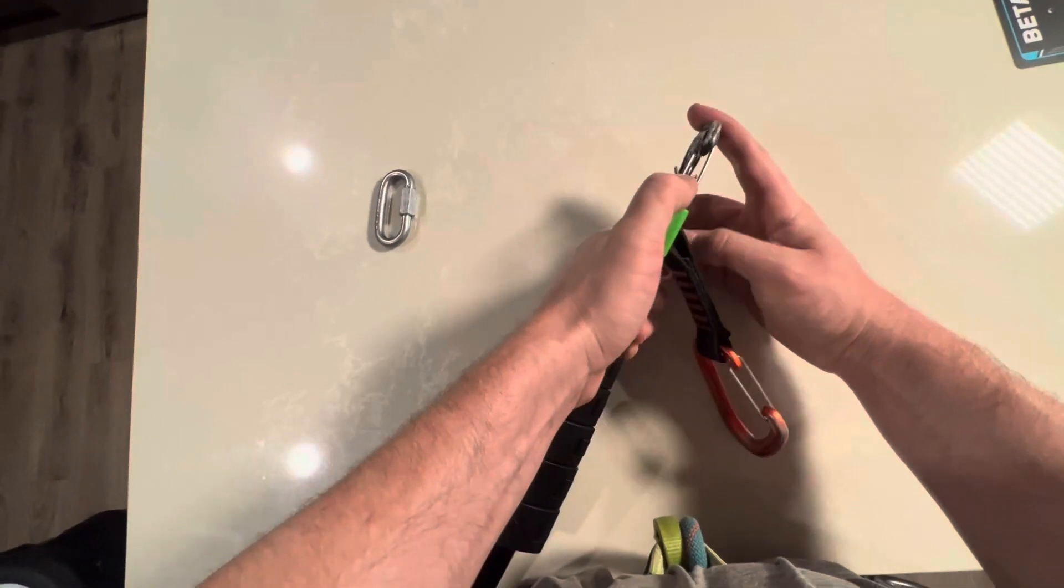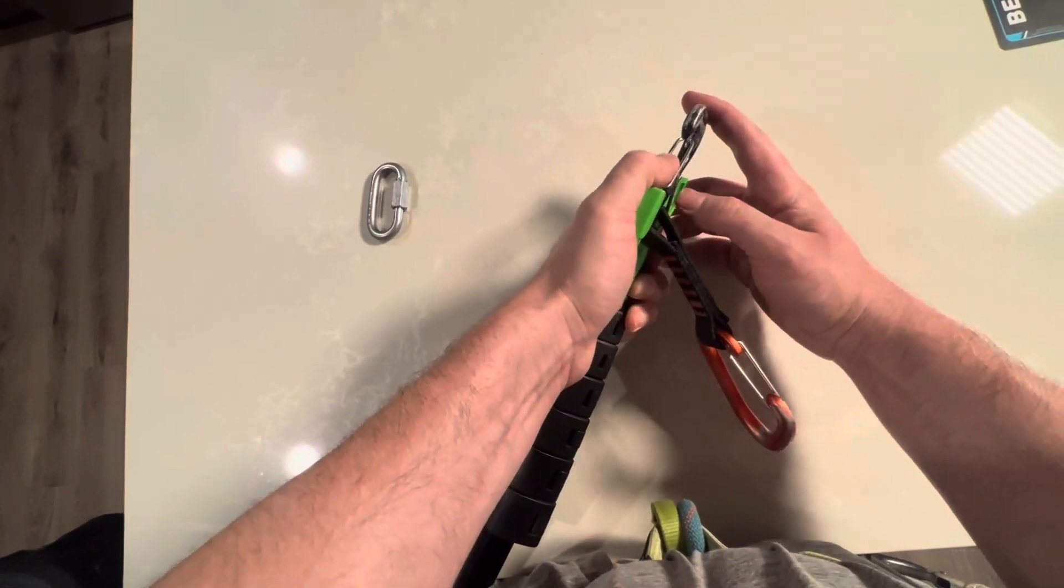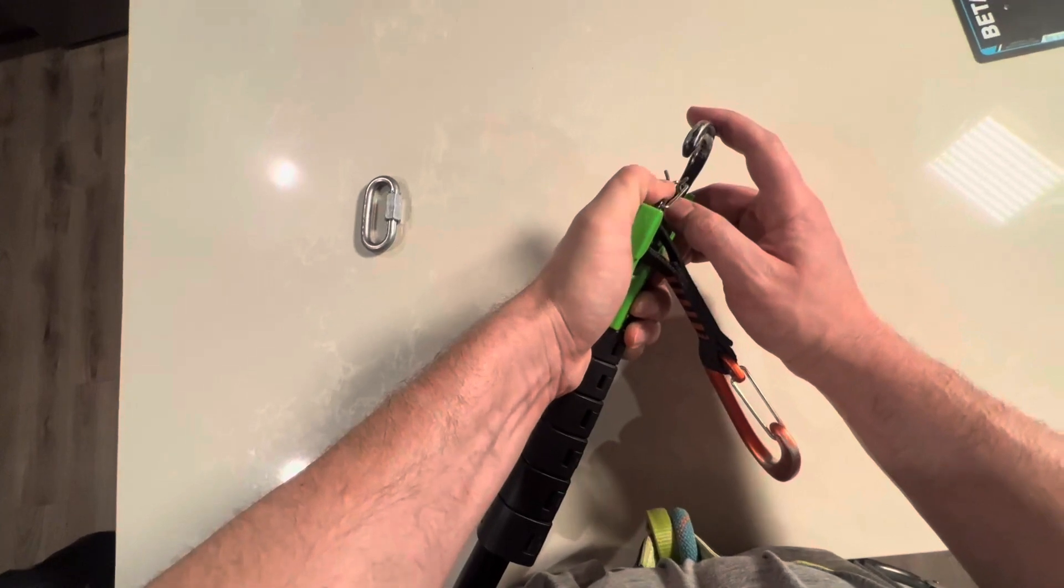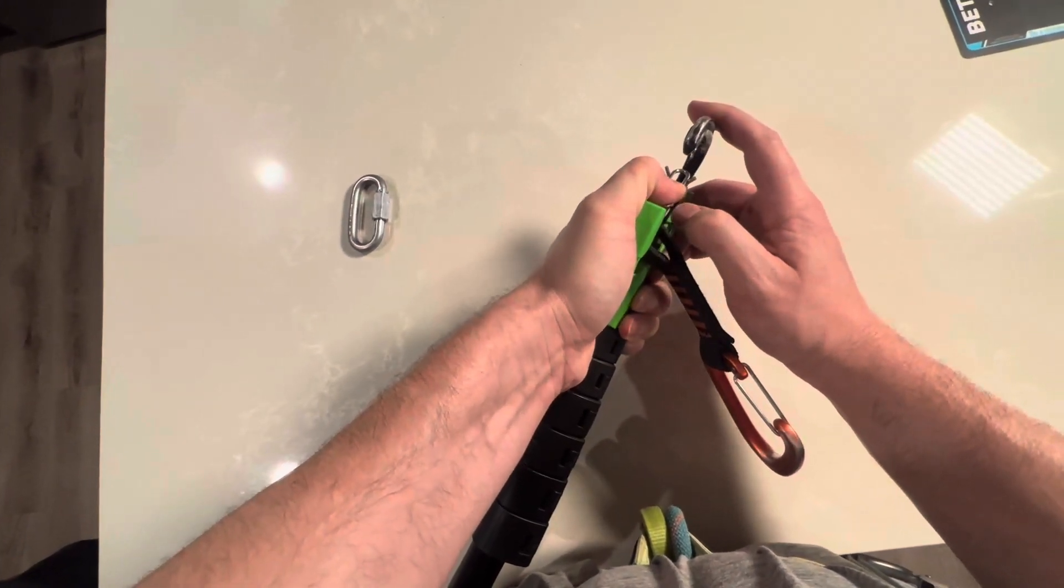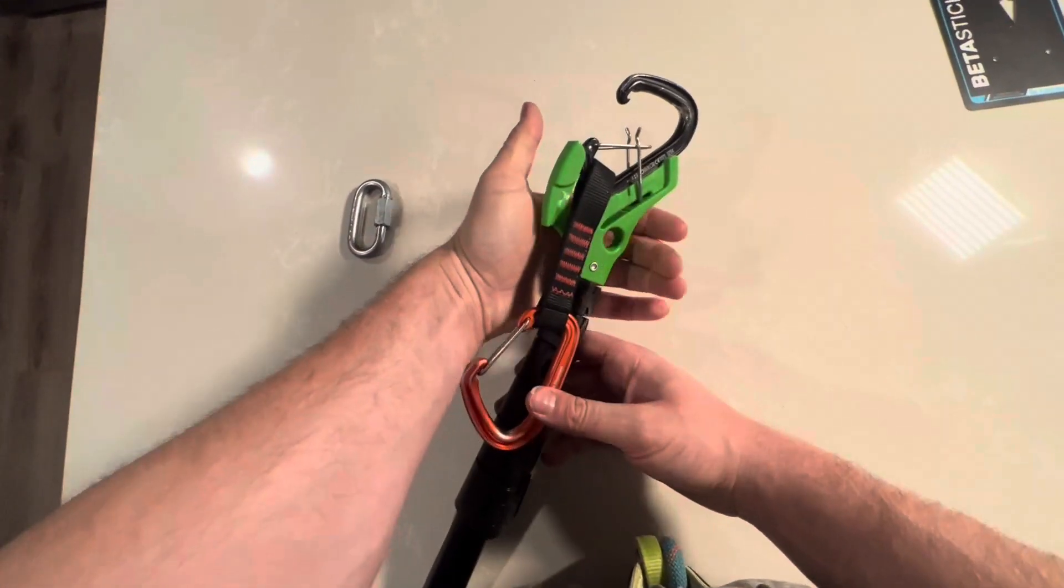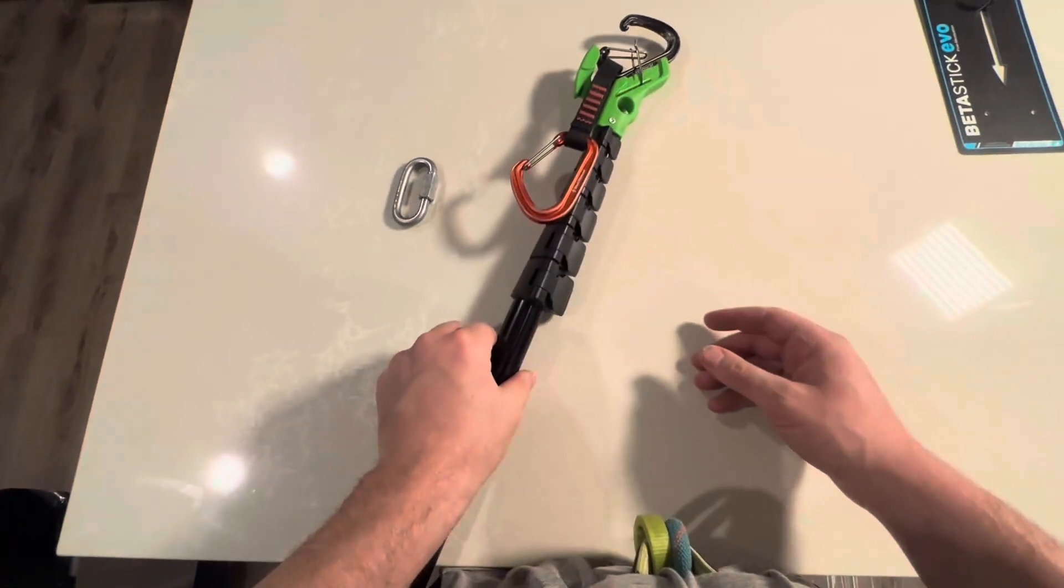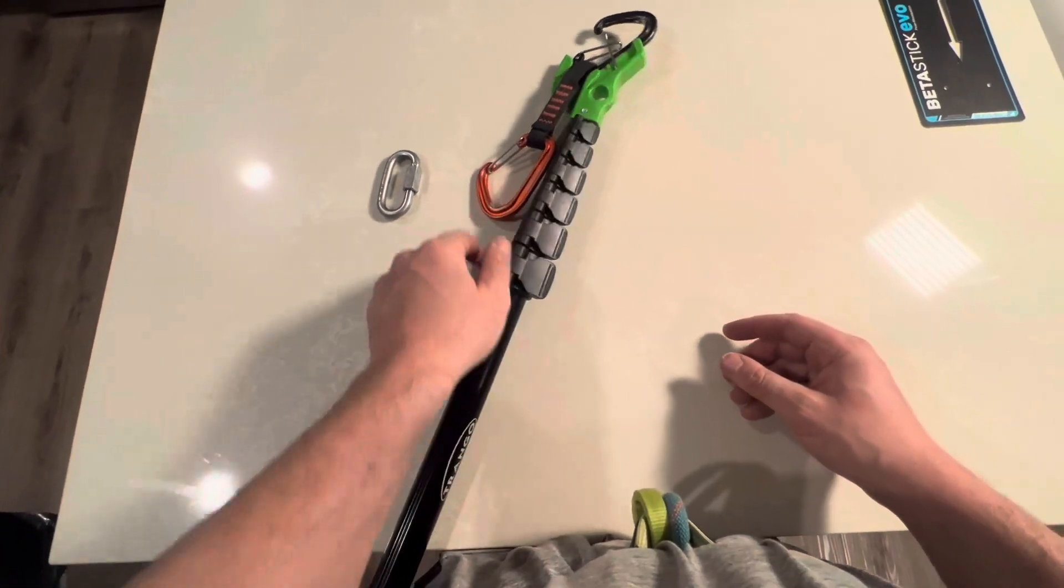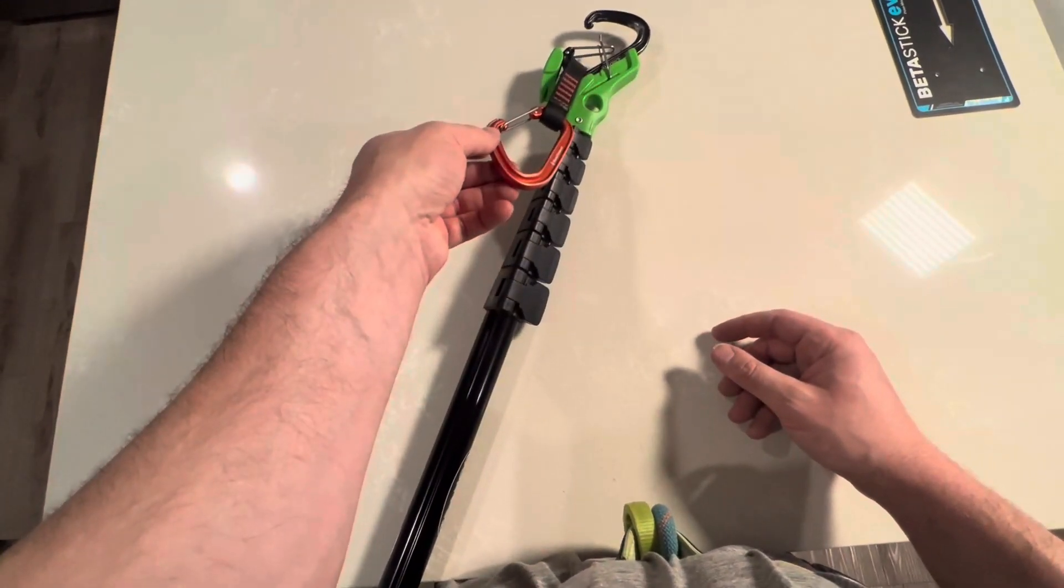You then have to open up the wire gate here and put it into this piece which just clips in. Now the final thing you have to do before sending it up is actually attach your rope to the other end of the quickdraw.